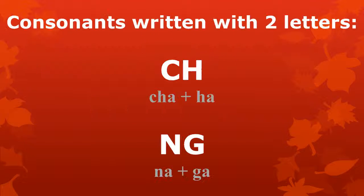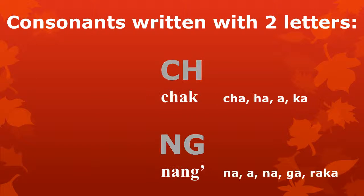There are two consonant sounds in Atong that are written with a combination of two letters. These are the sounds CH and NG. The sound CH is written with a combination of the letters CHA and HA, as in the word CHA, spelled CHA-HA-A-GAH.